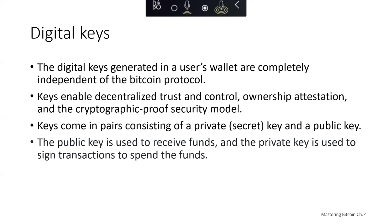We're going to cover the cryptography and explain the mathematics used in Bitcoin. Then we'll look at how keys are generated, stored, and managed, and review the different encoding formats used to represent private keys, public keys, addresses, and script addresses. Finally, we'll take a quick look at advanced uses of keys and addresses like vanity addresses, multi-signatures, script addresses, and paper wallets.